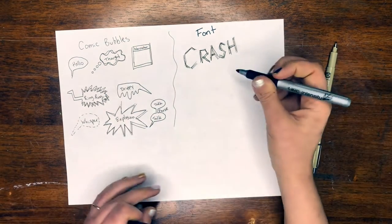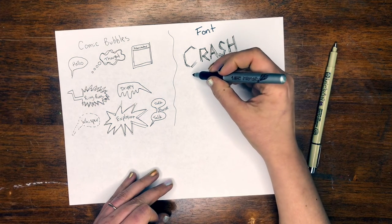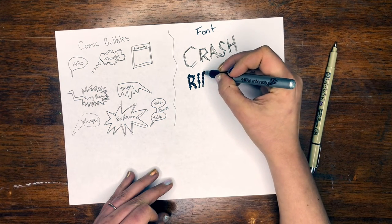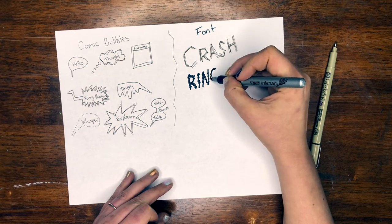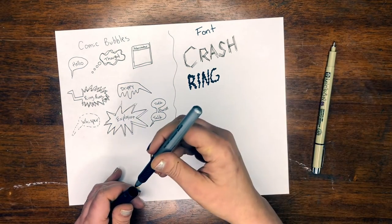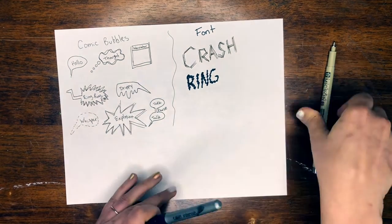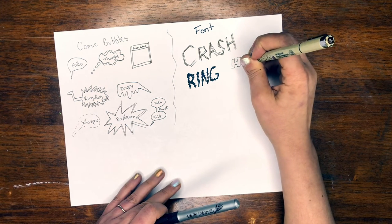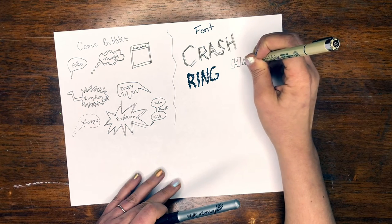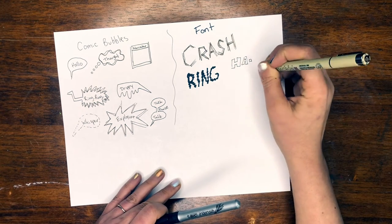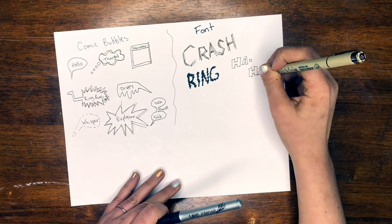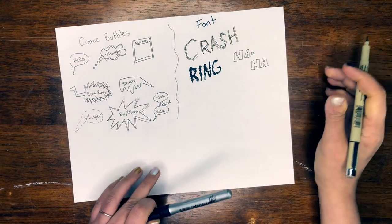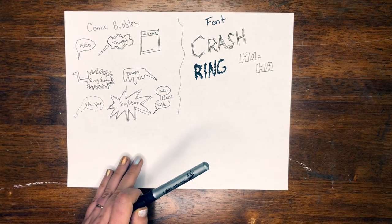Or if we did like, oh, the ringing, like we said, maybe ring would go like this shaky. Maybe that looks like ring. And maybe if we were to write like somebody laughing, would that look like box letters? Or maybe that would look like bubble letters? And how it's spaced out. Space them out. Play with where they are in your composition. So we have comic bubbles and fonts. What else could be another tip?